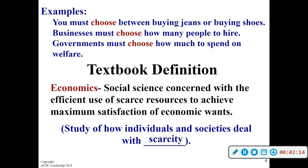The textbook definition: economics is a social science concerned with the efficient use of scarce resources to achieve maximum satisfaction of economic goals. In any free market or capitalist society, people are going to do what benefits themselves the best — what we call operating in their own self-interest. This isn't saying people are selfish or don't care about others; it's just that people are going to take care of their wants and needs with the means that they have.